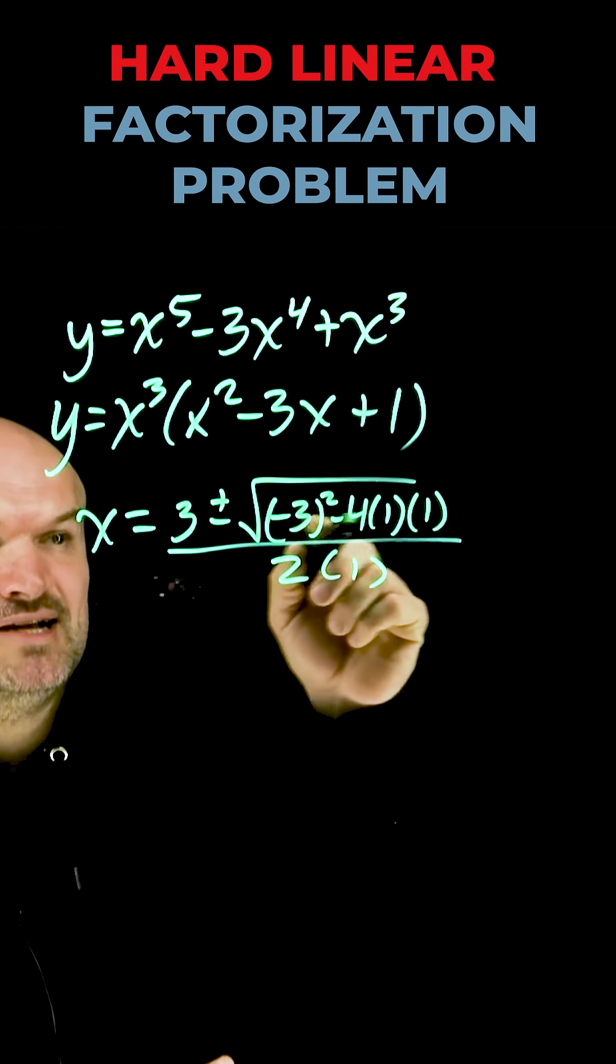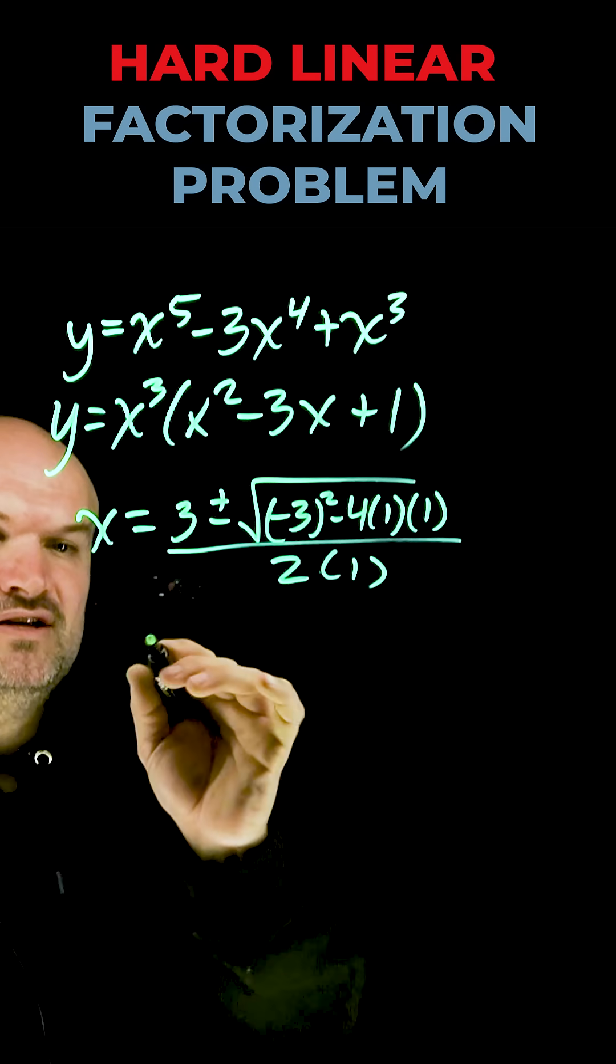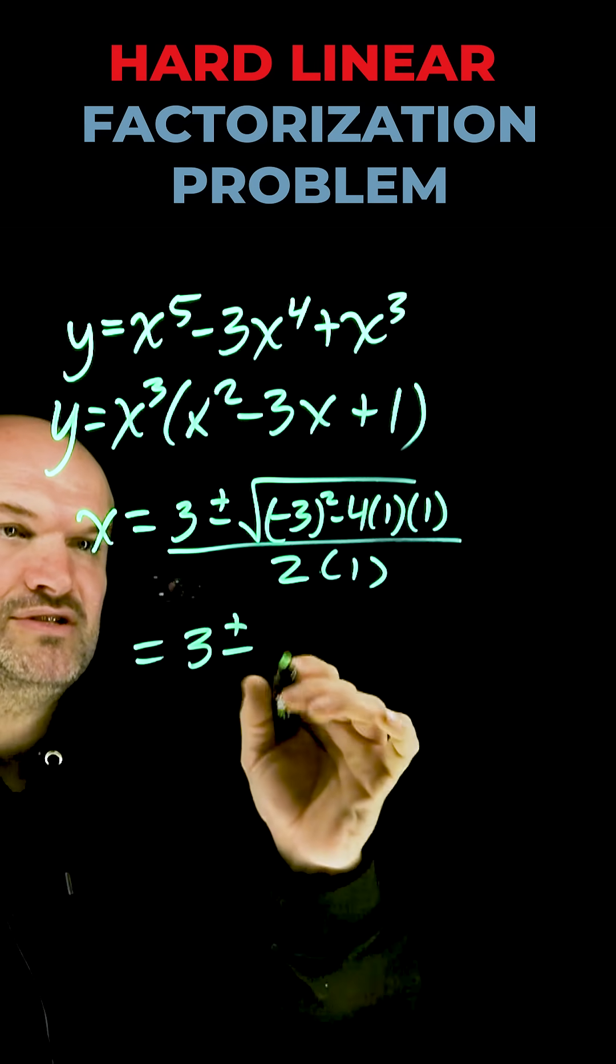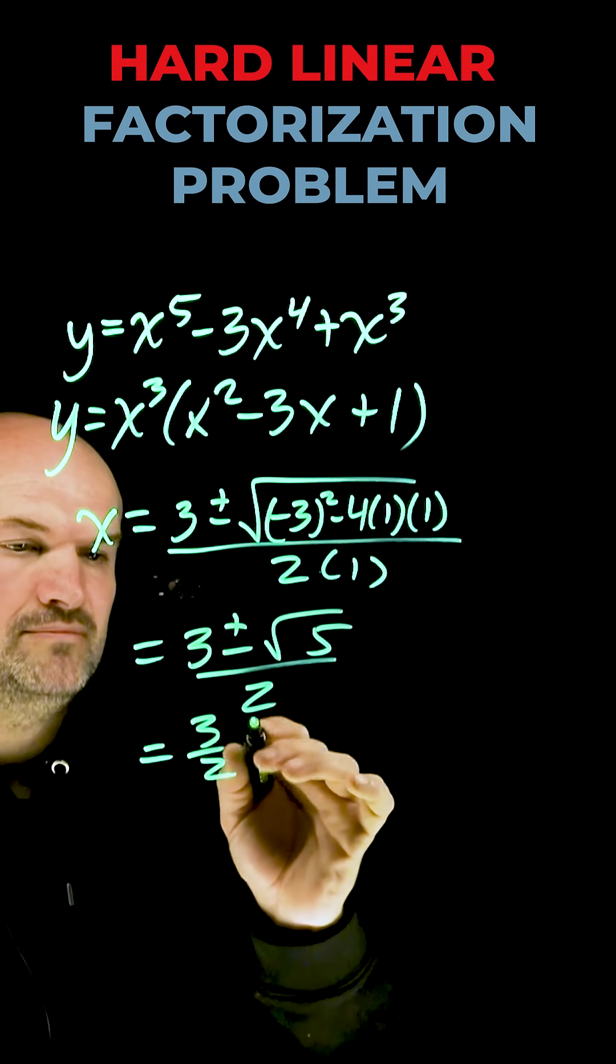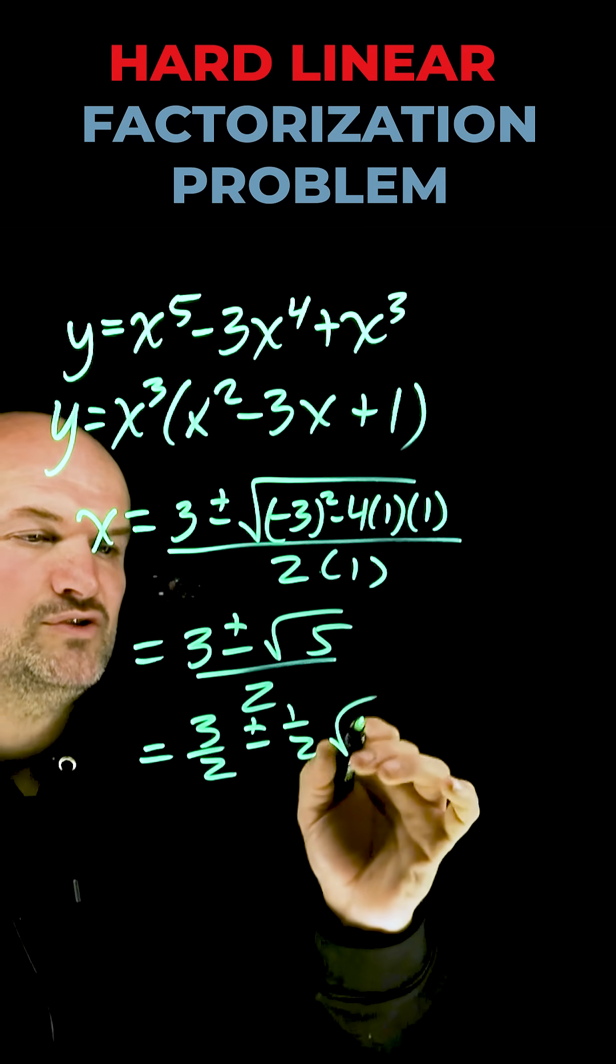Negative 3 squared is going to be 9 minus 4 is going to be 5, so therefore I can rewrite this as 3 plus or minus the square root of 5 over 2, which also can be written as 3 halves plus or minus 1 half square root of 5.